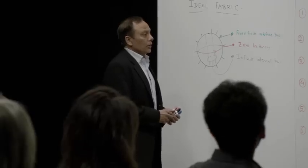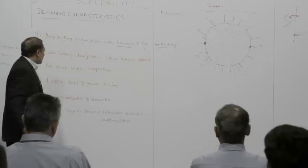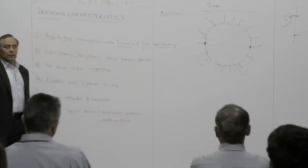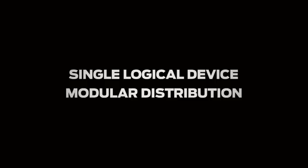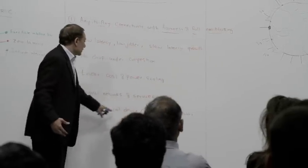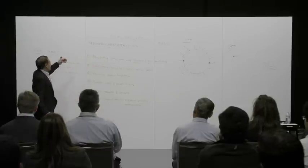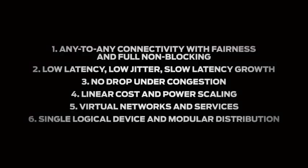The last property, which is really important, is that Q-fabric appears to be a single logical device. Despite the fact that its implementation is modular and distributed. But the software, in fact, the director makes it appear to be a single logical device. So there you have it. Six defining characteristics of Q-fabric. And again, I want to emphasize the point that with these defining characteristics, Q-fabric comes incredibly close to the ideal fabric.